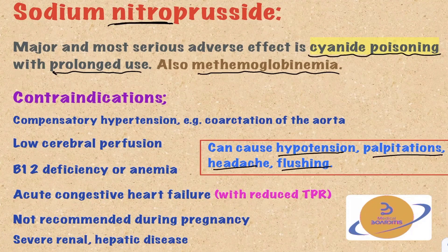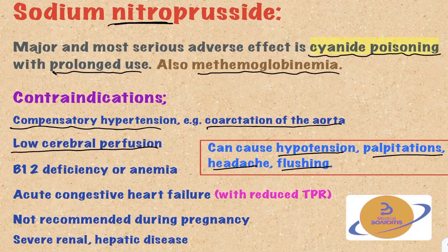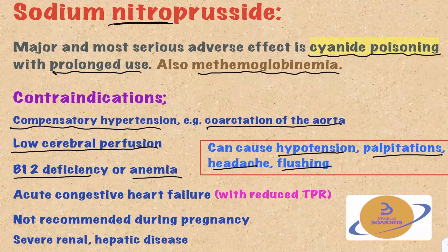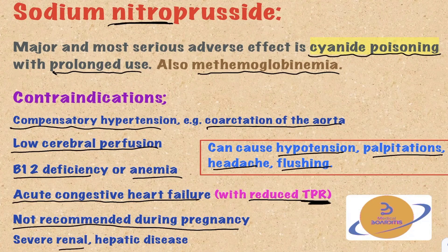Contraindications to sodium nitroprusside include compensatory hypertension, like in coarctation of the aorta, where the hypertension is necessary for the patient's survival. Also, it is contraindicated in cases of low cerebral perfusion, acute congestive heart failure with reduced total peripheral resistance because this can result in shock. Sodium nitroprusside is also not recommended during pregnancy, and should not be used in patients with severe renal or hepatic disease.